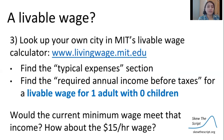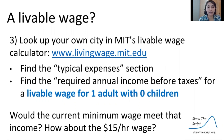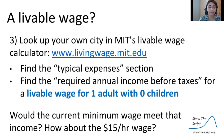So what we're going to do is see what a livable wage really means. MIT has a livable wage calculator, and we're going to use this link to get there. We're going to find the typical expenses section of the livable wage calculator and find the required annual income before taxes for just us — one adult, no children — and see whether the current minimum wage of $7.25 an hour or the $15 minimum wage would meet that livable wage income.